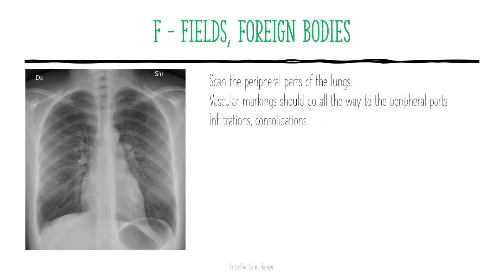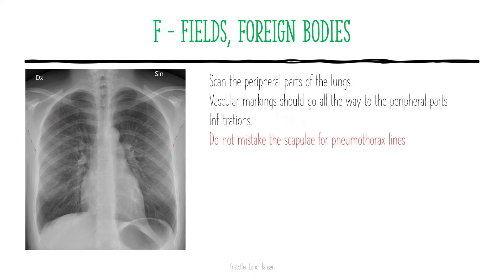F stands for fields or foreign bodies. Fields is one of the more important parts of the chest x-ray examination. You have to scan the whole peripheral part of the lung for any sign of pathology. The vascular markings should go out to the periphery of each lung — if they don't, it is usually a sign of pneumothorax. You can also scan for infiltrations. A very common beginner mistake is looking at the scapula and thinking those lines indicate pneumothorax, leading to a misdiagnosis when the patient is actually fine.